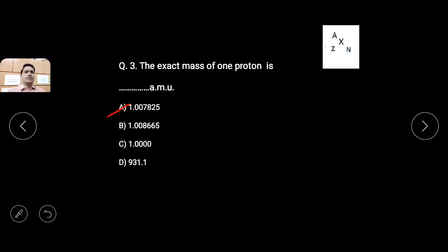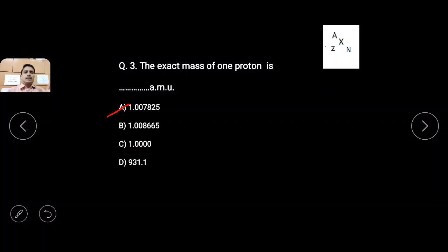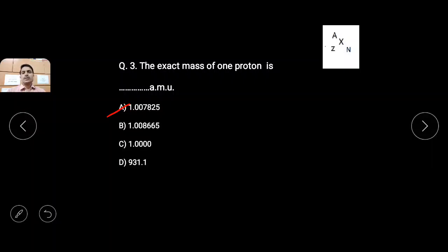You should remember the general representation used in nuclear chemistry. Any element X is represented with Z at the lower left corner indicating number of protons (atomic number), capital N at the lower right corner indicating total number of neutrons, and capital A at the top indicating mass number. A equals Z plus N — total number of protons and neutrons. This knowledge will help you solve nuclear chemistry questions.